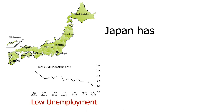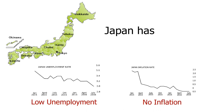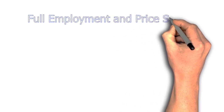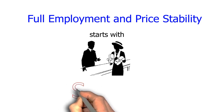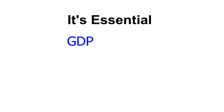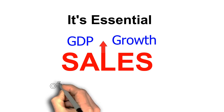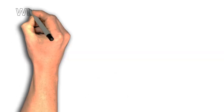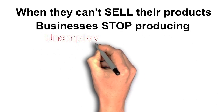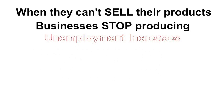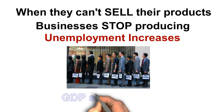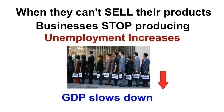How then, according to Modern Monetary Theory, can full employment and price stability be achieved in countries that can produce their own sovereign currency? It all starts with sales. Essential to the productive growth of the economy, or gross domestic product, are sales of goods and services. Without being able to sell their products, businesses will stop producing. When they stop producing, they stop hiring and start laying off workers. Unemployment increases and there is a slowdown in the growth of the GDP.